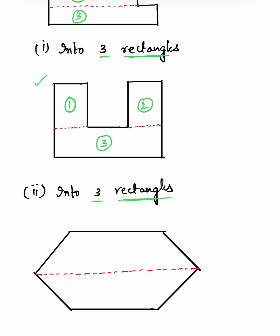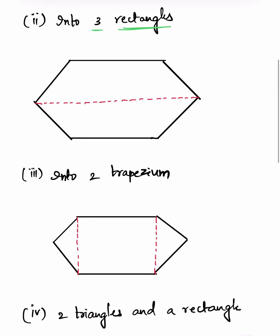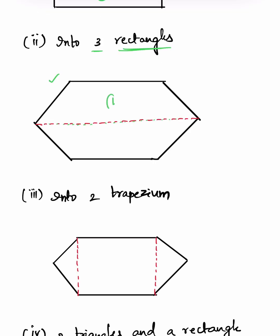Area calculation becomes very easy if we divide the given figure into convenient smaller figures. For the third figure, we have to divide it into two trapeziums. A trapezium has one set of parallel sides and two other sides — it is a quadrilateral. By drawing this red line, we divide the figure into two trapeziums, and adding their areas gives the area of the whole figure.